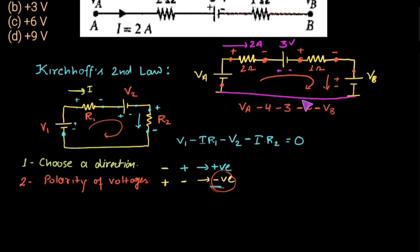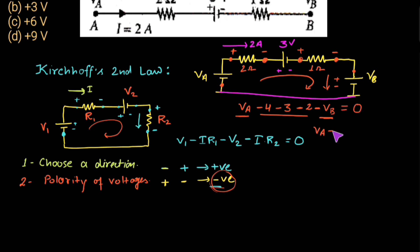This is the algebraic sum of all voltage drops in the closed loop. According to Kirchhoff's Second Law this sum equals zero: V_A − 4 − 3 − 2 − V_B = 0. Rearranging to isolate V_A minus V_B on one side: V_A − V_B = 4 + 3 + 2 = 9 volts.